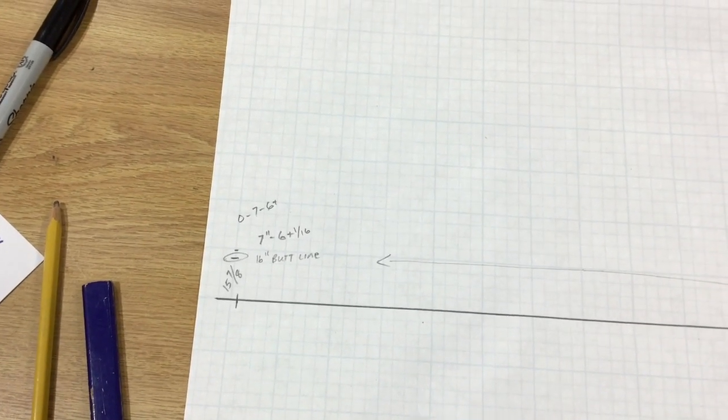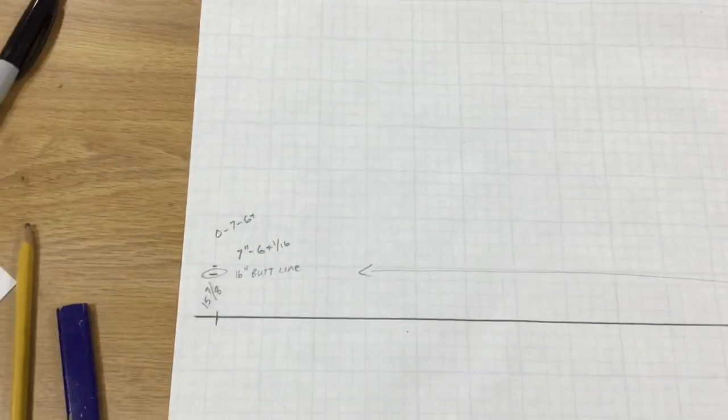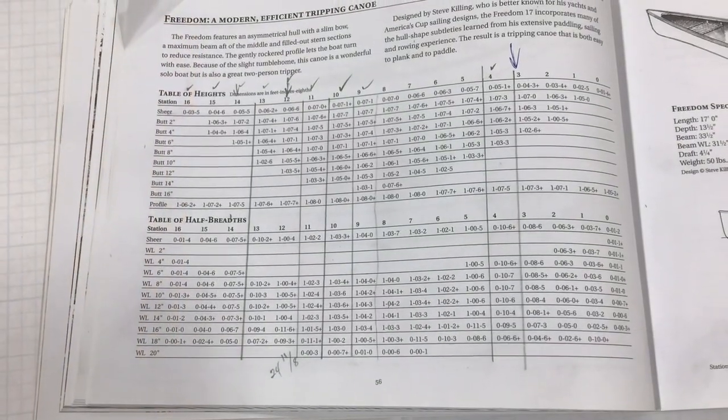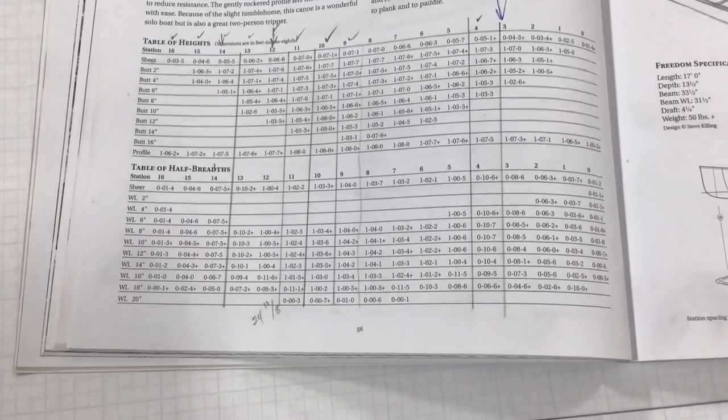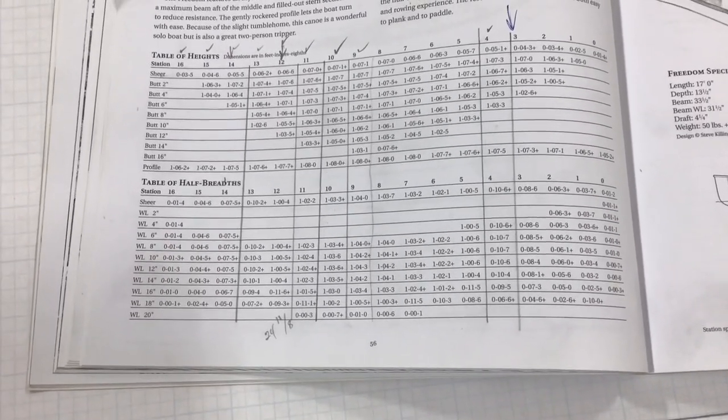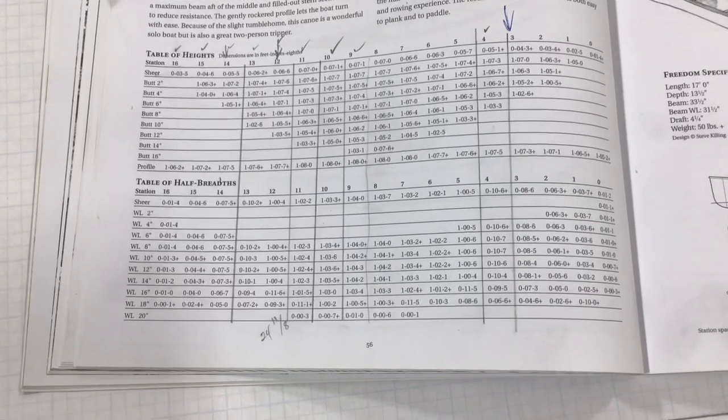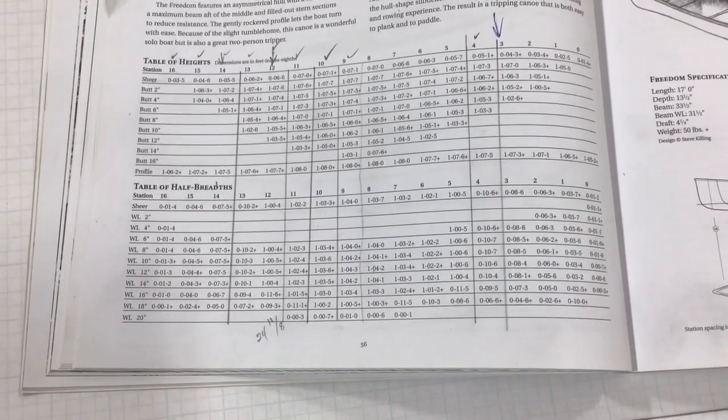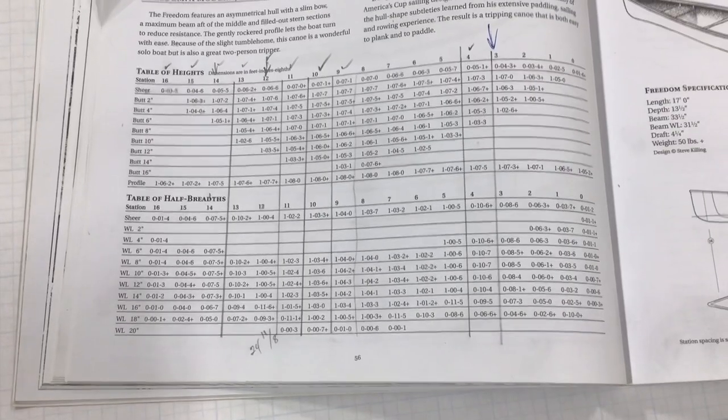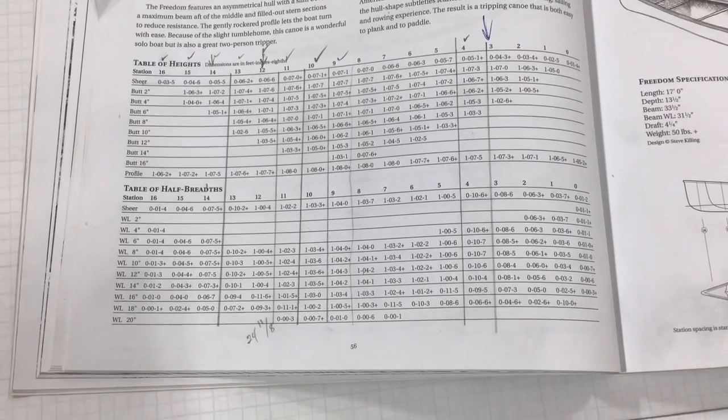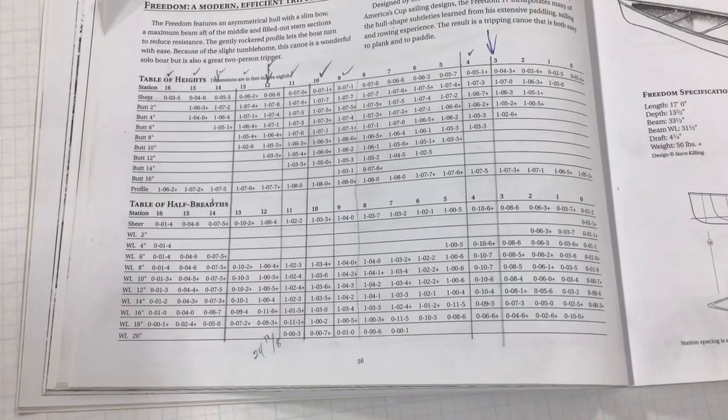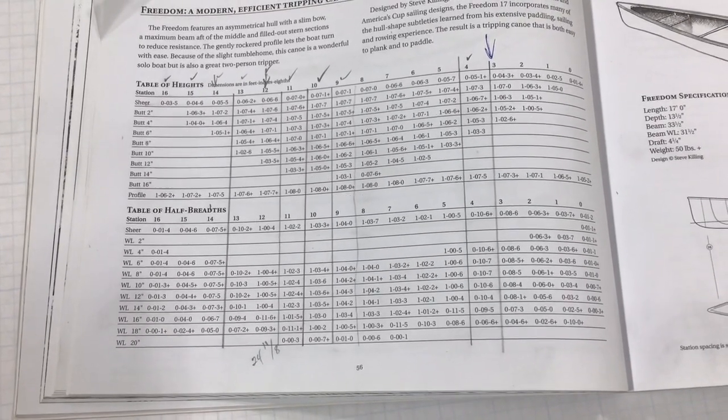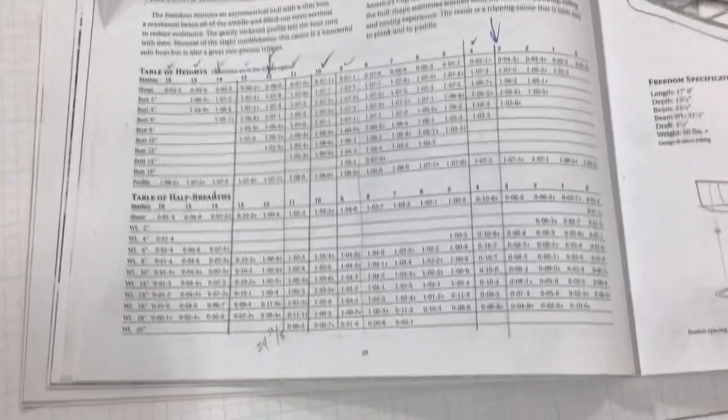Now we'll do the half breadths. I'm going to plot a few of those and then we'll come back. So now we've plotted the water lines. The beauty of this is that they start to intersect with the butt line measurements. So the table of heights start intersecting with the half breadths, and it's kind of a check system to where you can see if your curve is going to be right and if they're mating up.